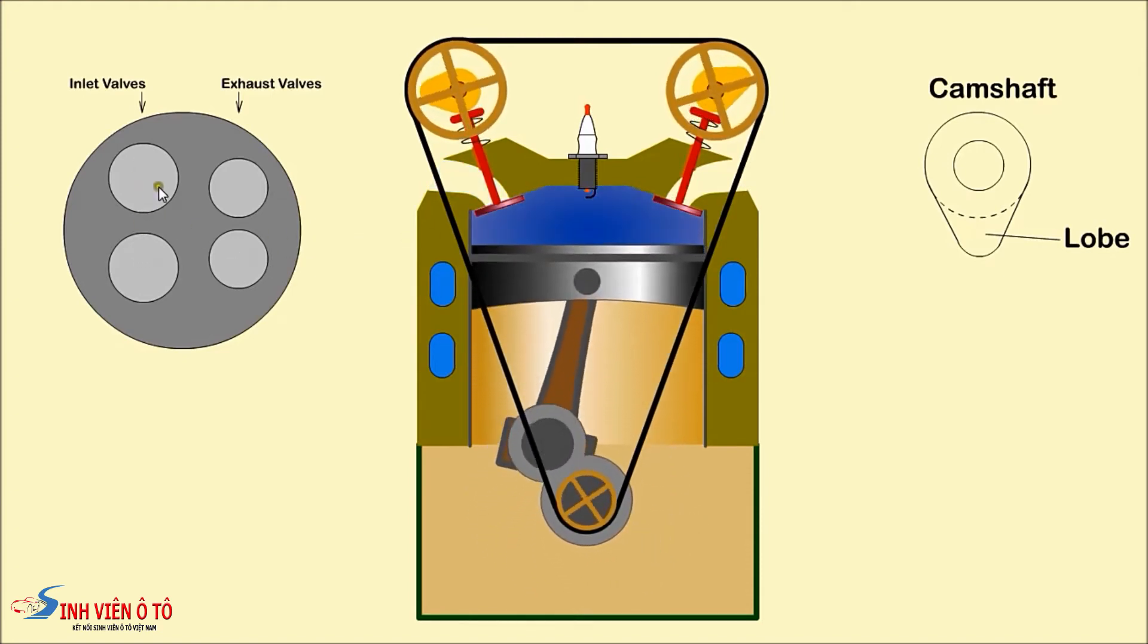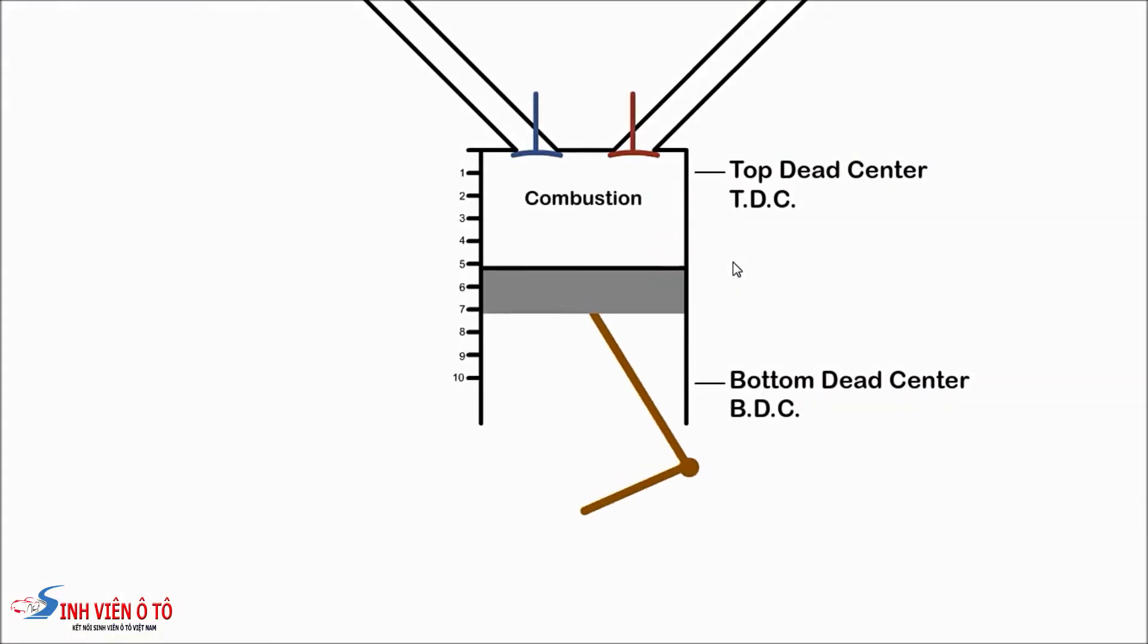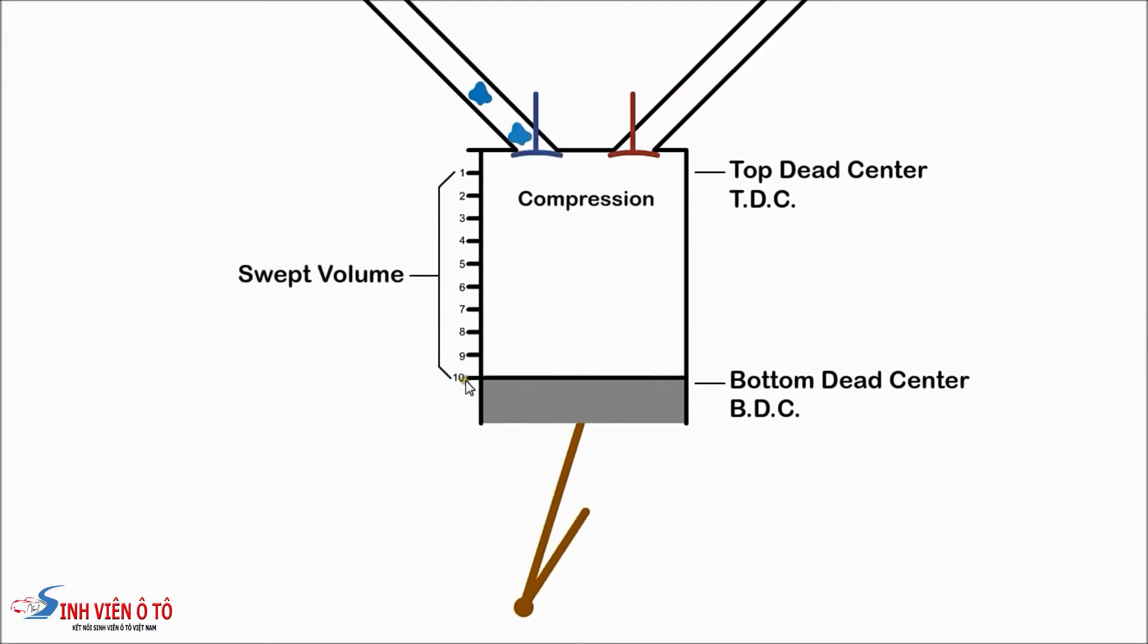The top position of the piston is called Top Dead Center, TDC, and the bottom position is called Bottom Dead Center, BDC.